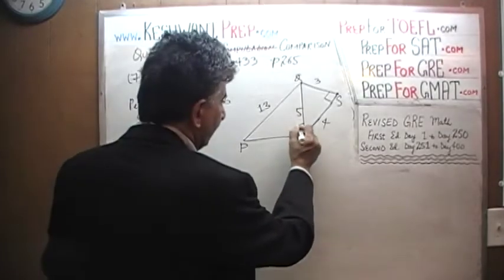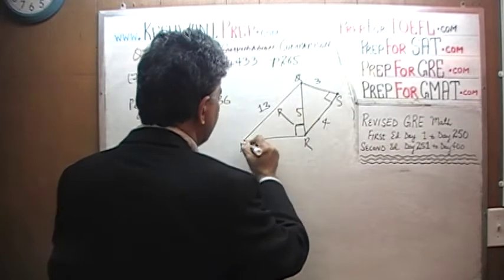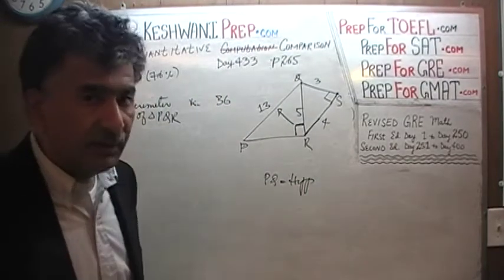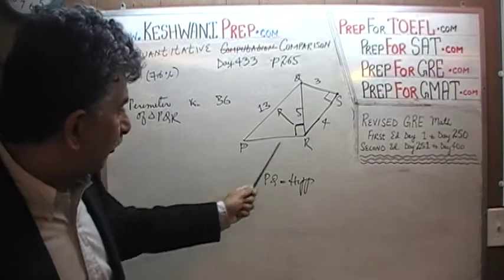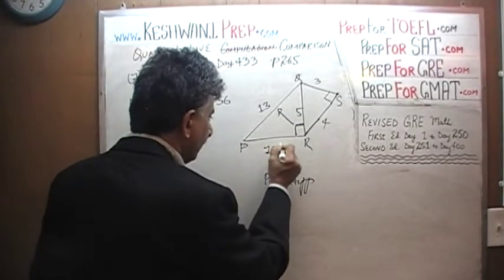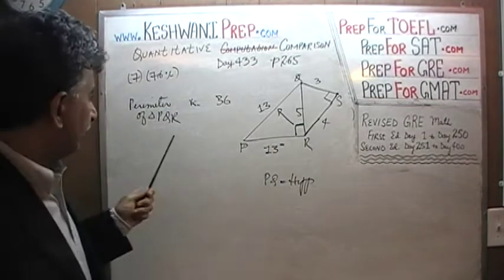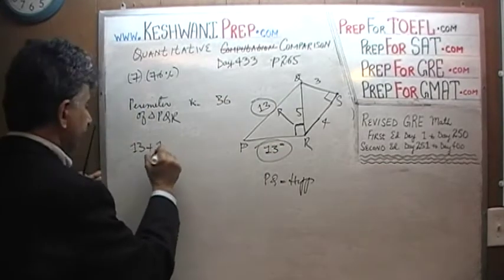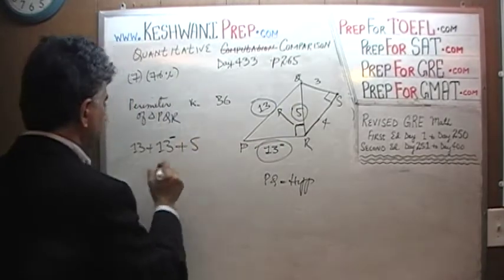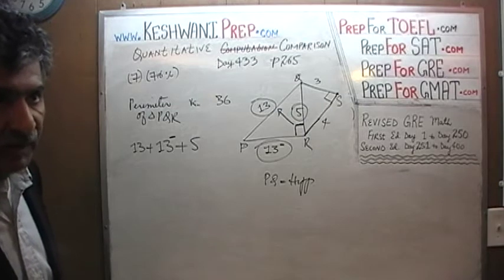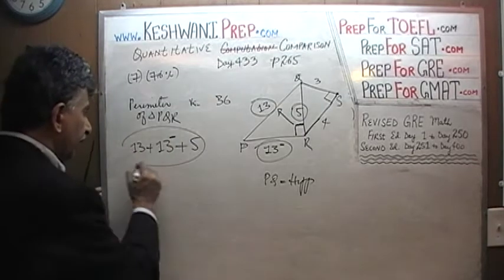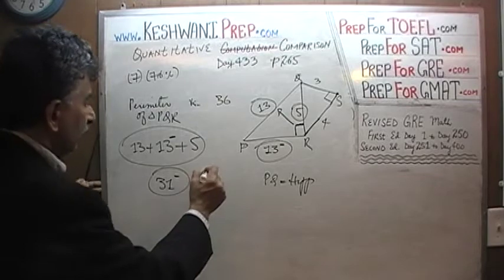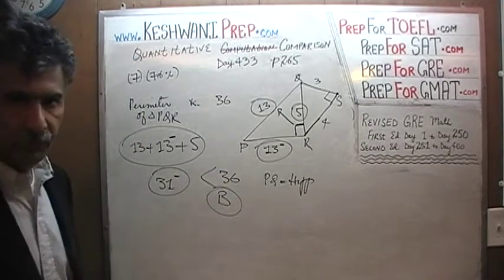PQ = 13 is the hypotenuse, and the hypotenuse has to be the longest side in any right angle triangle. So PR, whatever it is, must be less than 13. Therefore the perimeter is 13 plus something less than 13 plus 5 — that's less than 13+13+5 = 31. So the perimeter is less than 31. Comparing a quantity less than 31 versus 36, obviously the answer is B. That's all, we're done.